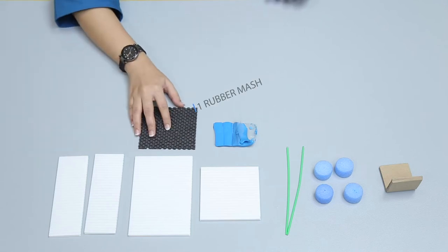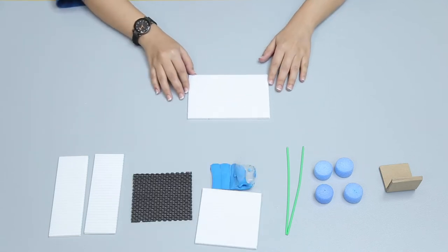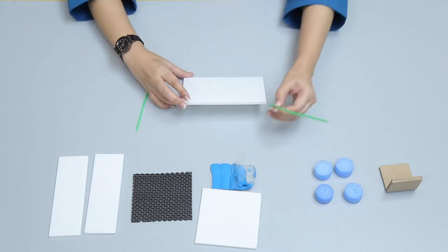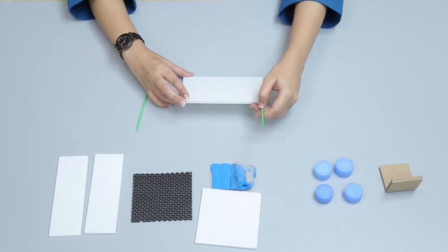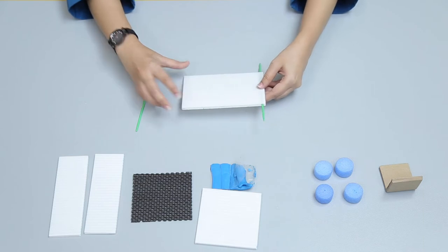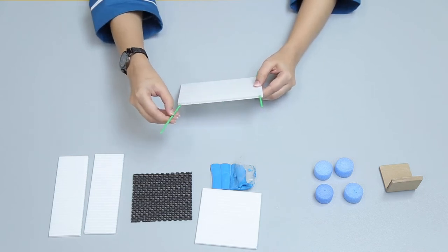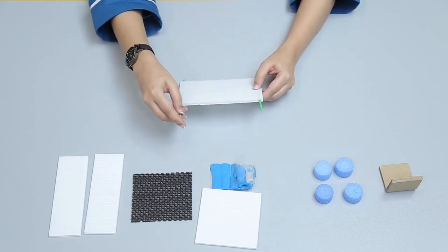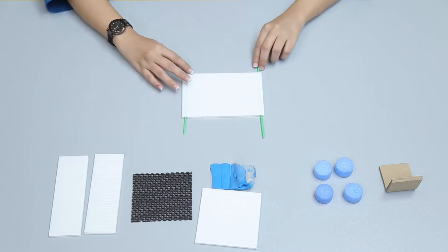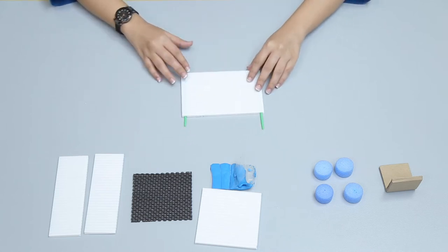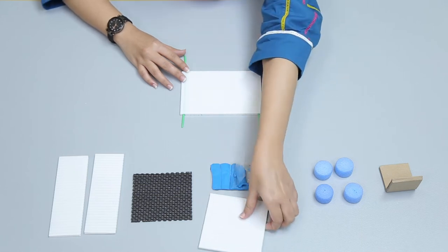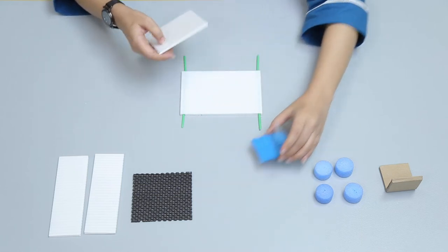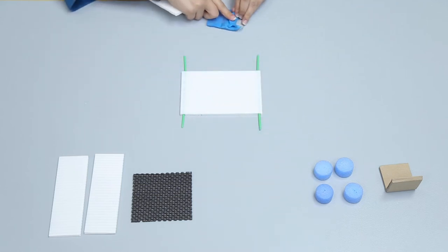Take a corrugated sheet and insert the two plastic sticks on each side hole. Stick two corrugated sheets on the base of the car with sticky tags.